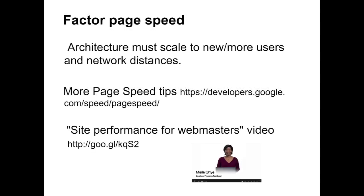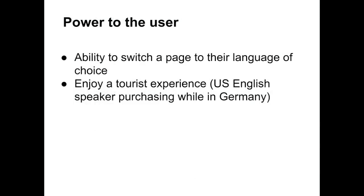Another best practice is paying attention to page speed, especially if your new language pages are serving users from a greater network distance. For example, if your servers are located in Australia but you hope to serve English users in the United States, check that your American users aren't experiencing unwanted delays. Speaking of users in different locations, strive to empower the individual user to find their preferred language, as users often appreciate the ability to switch a page to their language of choice rather than be locked into the language of their IP.